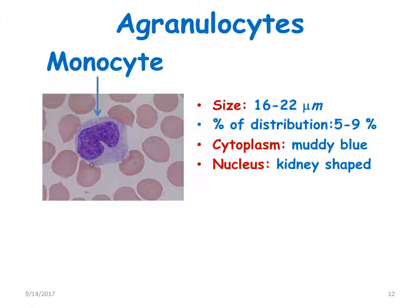The last agranulocyte is the monocyte. Monocytes have a size of 16 to 22 micrometers and a percentage distribution of 5 to 9%. The cytoplasm is muddy blue in color and the nucleus is kidney-shaped.